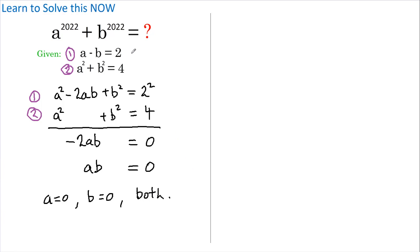Now if we take a further look at equation 1, we can see that if a equals 0, then b must equal negative 2.